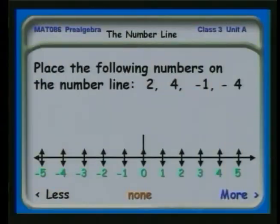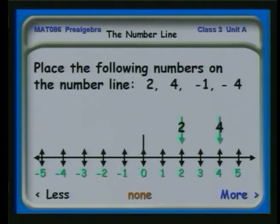Let's look at actually locating numbers on the number line itself. If we had a two, where would we put it? There. A four? Here. Negative one, or minus one? Here. And minus four? Here.